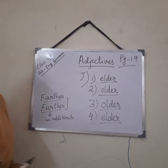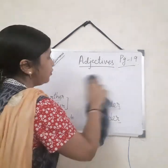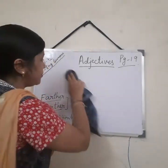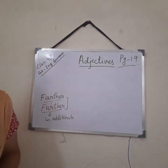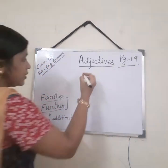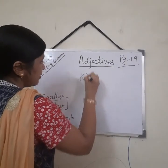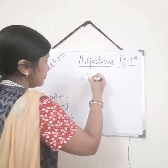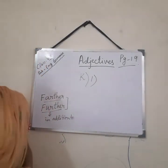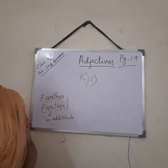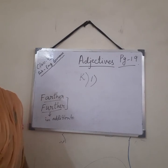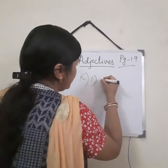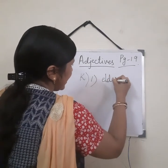Now come to exercise K. I think most of you have already solved the entire chapter, so let us just match the answers. In K, you have to fill up with eldest or oldest — that is the superlative degree. Number 1: 'He is the dash son of Mr. Bajaj.' Since 'son' is a close relation, we say eldest.